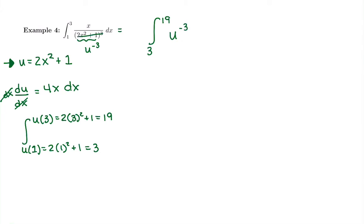And then lastly, I want to see if I have a perfect du or not. So for this, du is 4x dx. In order to have my du, I have an x and a dx. That is one-fourth of my perfect du.